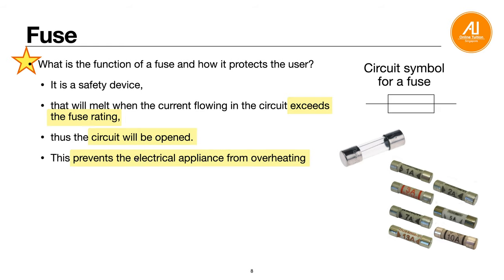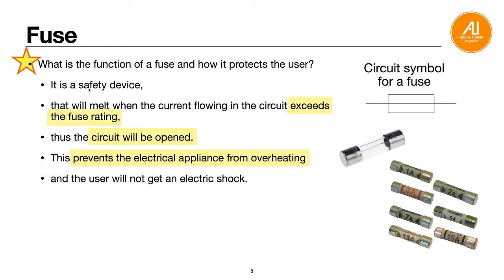This prevents the electrical appliance from overheating, since the large current is no longer flowing through it. It also prevents the user from getting an electric shock. So a fuse prevents your appliance from overheating and protects the user from electric shock. Once the current exceeds the fuse rating, the fuse melts. This is a template answer - make sure you can memorize it for your exam, as it is a very common question.